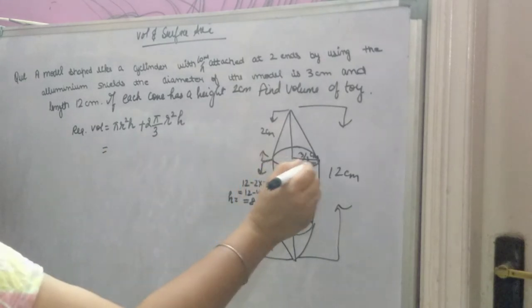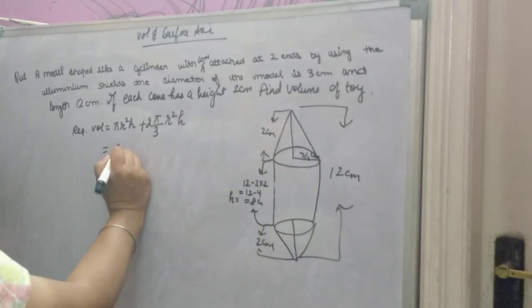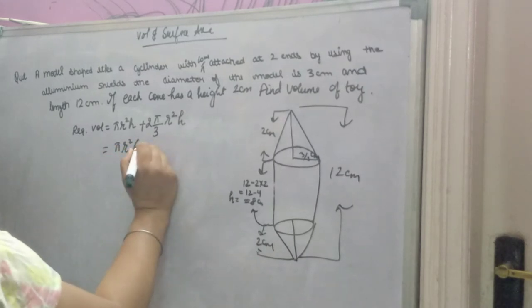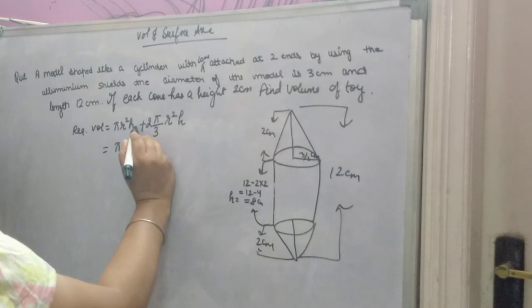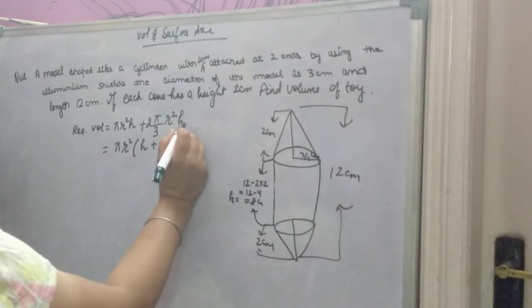Because r is common for the cylinder and cones, you can take it common. Pi is also common. So, pi r square, you can take common. You will get h, the height of the cylinder, plus the height of the cone.